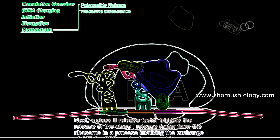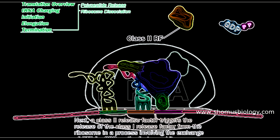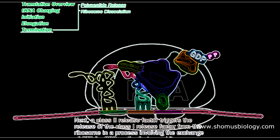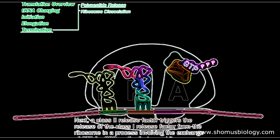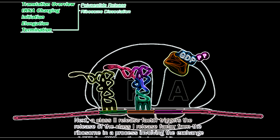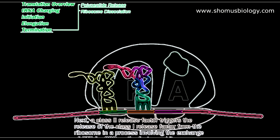Then class 2 release factor comes in, whose job is to release the class 1 release factor. Class 2 release factor brings GDP rather than GTP. It associates with the factor binding site in the A site, converts GDP to GTP, then hydrolyzes GTP back to GDP and dissociates, effectively separating the class 1 release factor.